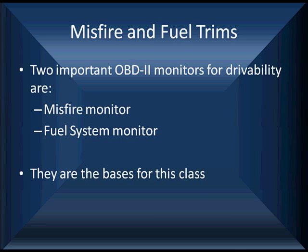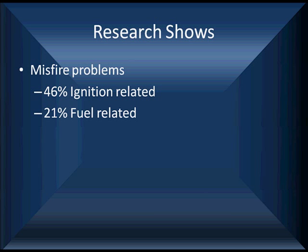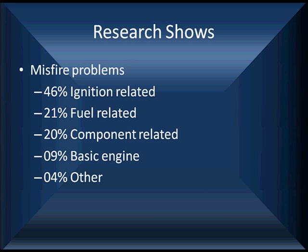These are the heart of the program, but there's a lot of peripheral things we're going to have to talk about. From our informal research study on misfire problems, we've found that about 40% are truly ignition related — that's why most technicians' first line is to find ignition misfire. But don't ignore that 21% are fuel related. 20% are component related, where some component has put us in a misfire condition not directly related to fuel or ignition. Basic engine functions cause a percentage, and a few are other various reasons unable to document.